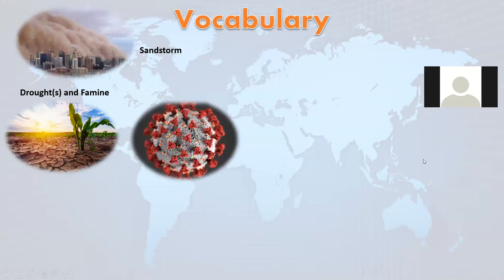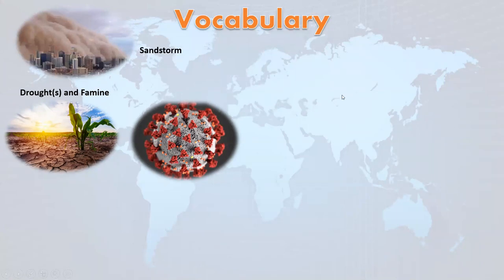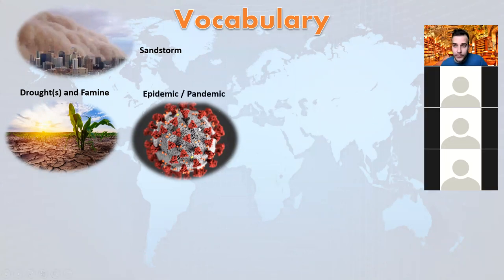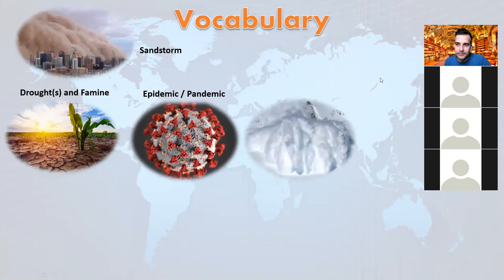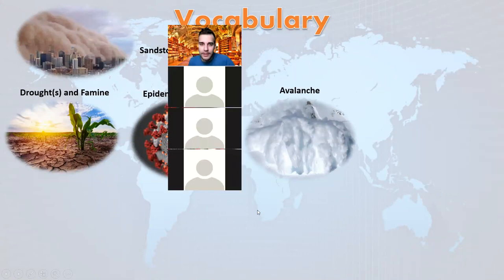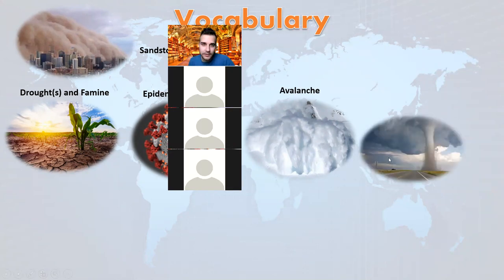Let's try another part. This one should be easy — what kind of disaster are we talking about? Pandemic. What is the difference between an epidemic and a pandemic? A pandemic is global and an epidemic is just local — it can be in a city or just one country. A pandemic is all around. Thank you. Let's try another idea: a lot of snow coming down the mountain. Avalanche — lavina. Then we have tornado. There we go.